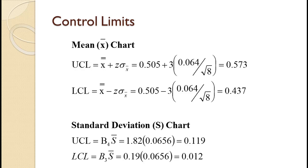Note that we used the standard deviation of the data as given in the problem. We divided by the square root of the sample size to convert this to the standard error used in the formula. Had the prior standard deviation not been given, we would have used the average standard deviation value. For the S chart, the average sample standard deviation of 0.0656 is the centerline. We multiply it times B4 of 1.82 to get the upper control limit of 0.119, and by B3 of 0.19 to get the lower control limit of 0.012.